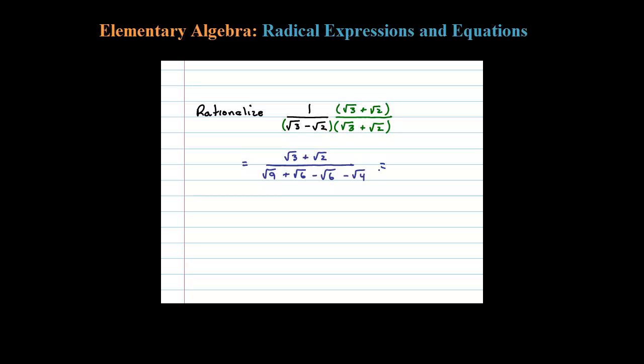This will always happen when you multiply conjugates: plus square root of 6 and minus square root of 6, those terms are going to add to 0. That leaves us with the square root of 9 which is 3, minus the square root of 4 which is 2.